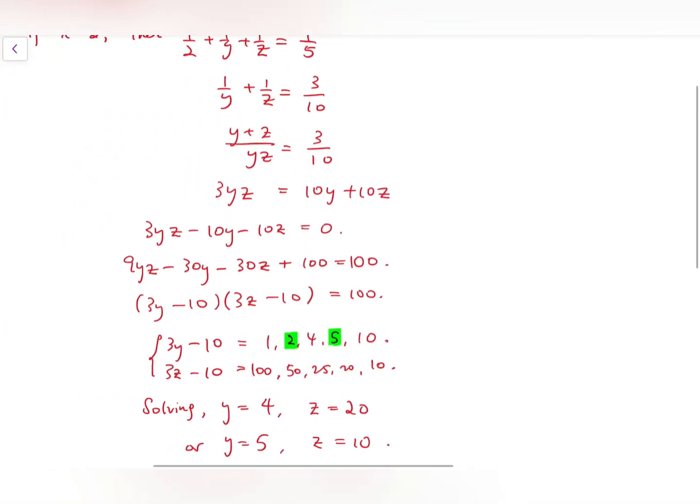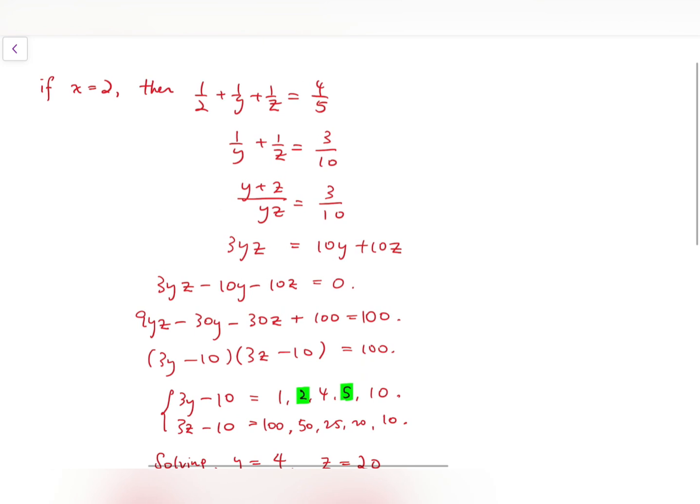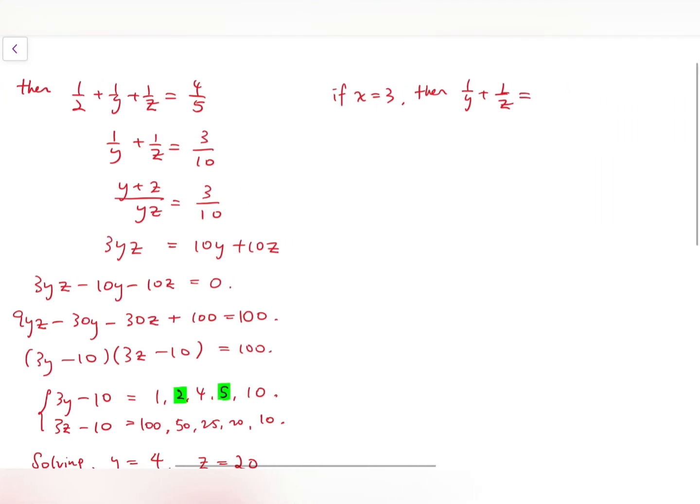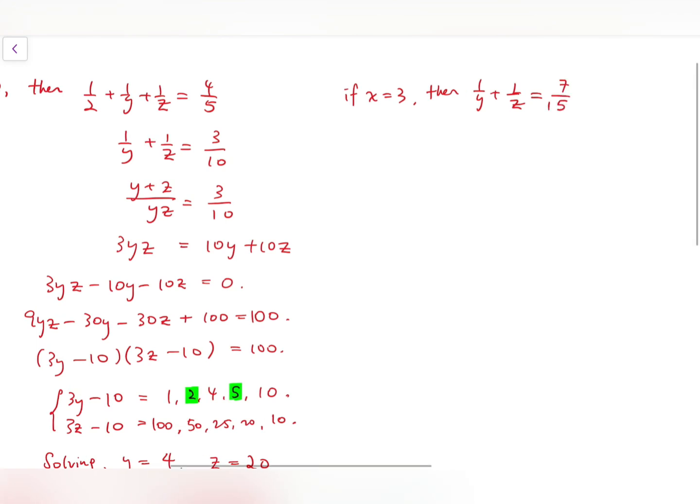Now move on to the second case, which is similar to what we have been doing when x equals 2. When x equals 3, then similarly, we can say the sum of 1 over y and 1 over z equals 4 fifths minus 1 third, and that is 7 over 15.